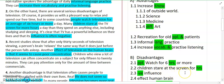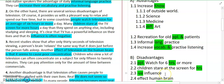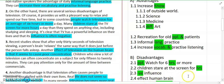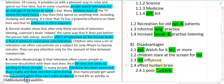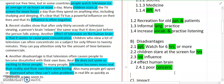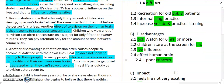Children stare at the screen for hours — more than they spend on studying or sleep. TV has a negative influence on their lives. We don't give attention to anything else. Watching 6 or more hours regularly also affects the human brain and reduces our concentration level.